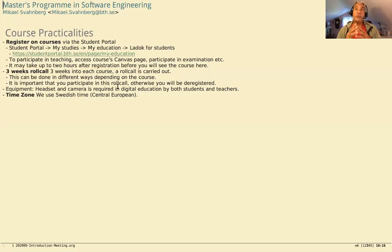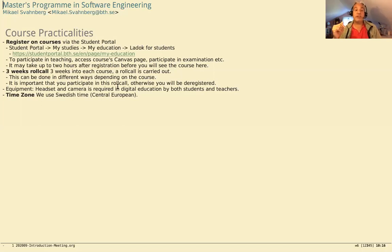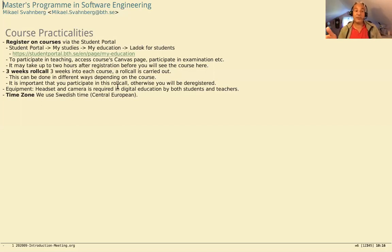Up to three weeks into the course, we are mandated to have a roll call — for statistical purposes and, for Swedish students, for government funding. It verifies you registered with the intention of actually taking the course. Each course manager decides how to do this: sometimes it's as simple as posting a message on the discussion board, sometimes it's an early assignment you have to submit. You don't necessarily have to pass that assignment — the point is to show you're active in the course, not necessarily successful yet.